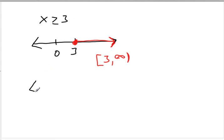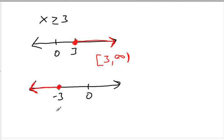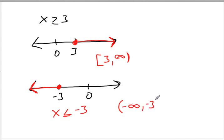You can also have negative infinity. For example, graphing x is less than or equal to negative 3, the boundaries would be written as parenthesis negative infinity comma negative 3 bracket, since we include negative 3 but the lower bound is negative infinity.